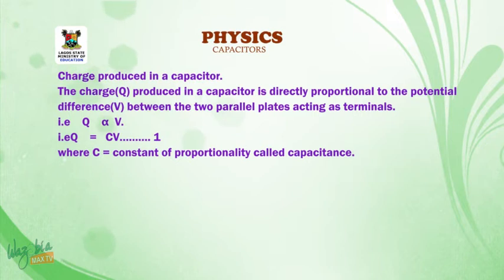Charge produced in a capacitor. The charge Q produced in a capacitor is directly proportional to the potential difference V between the two parallel plates acting as terminals. That is, Q is directly proportional to V. Therefore, Q will be equal to CV, where C is a constant of proportionality called capacitance.